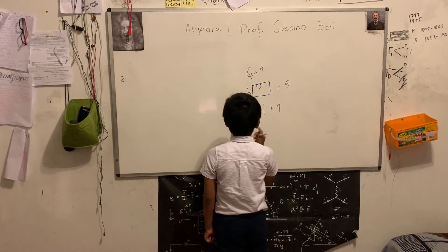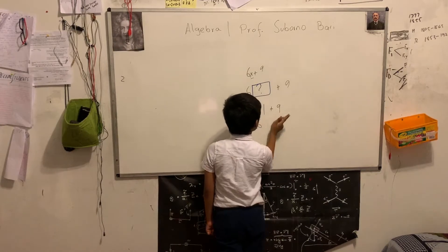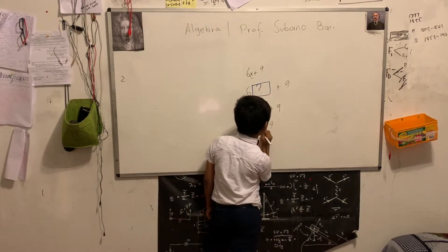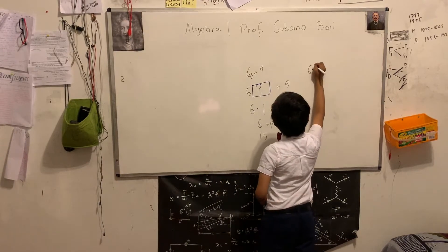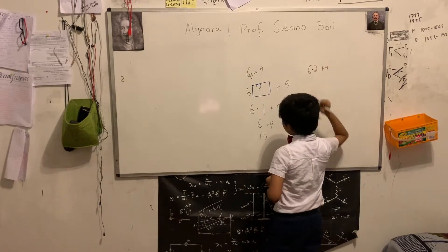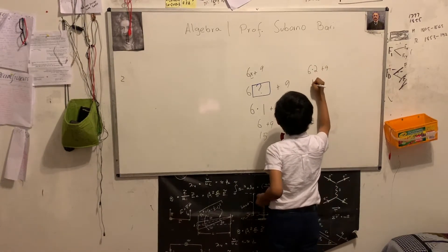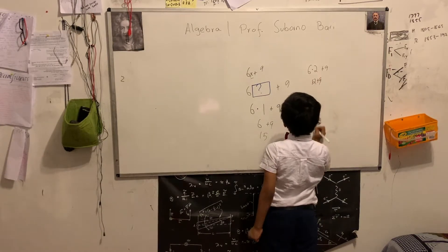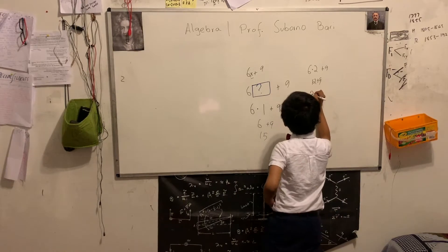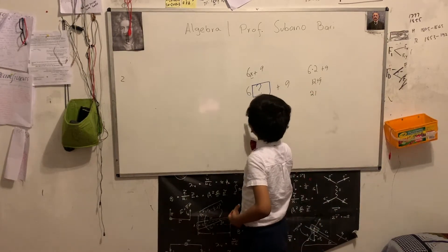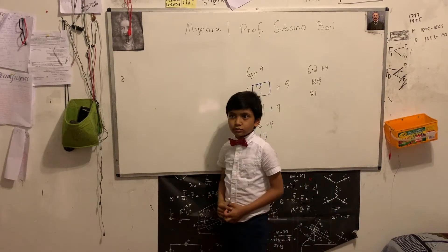In PEMDAS, it would come first multiplication, 6, and then addition, 6 plus 9 is 15. We can plug in 2, and you can see that as we change x, the whole expression also changes.